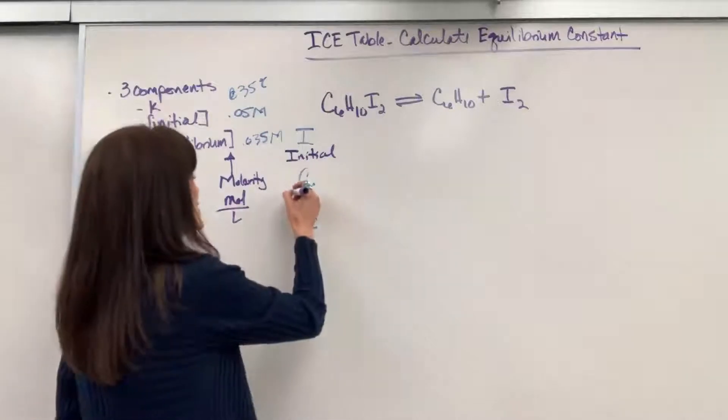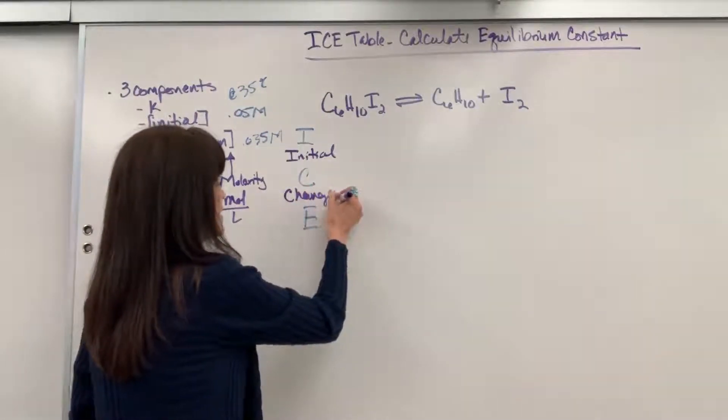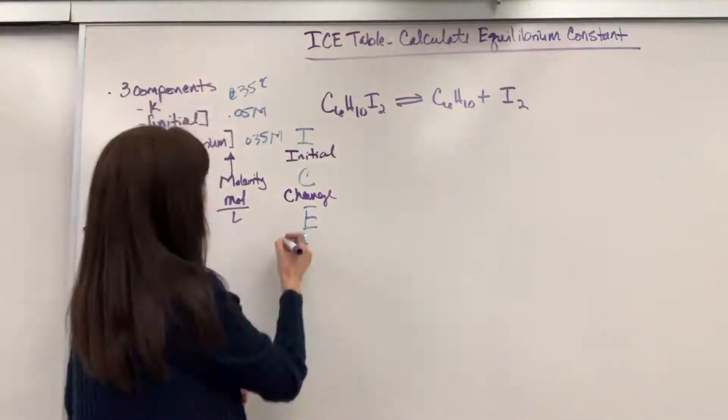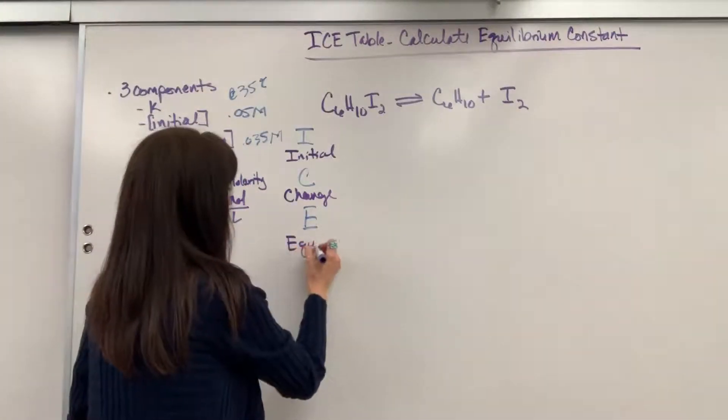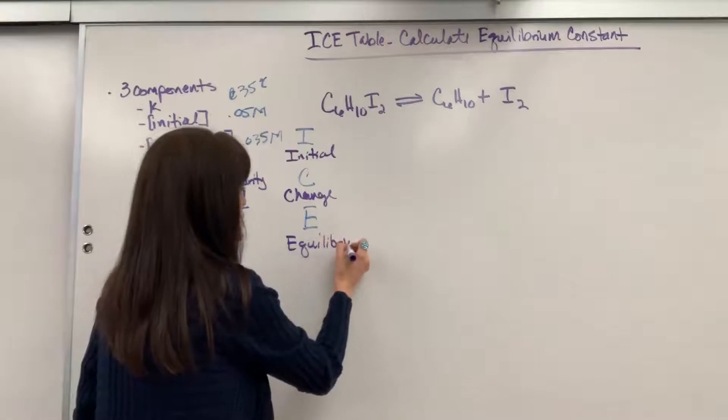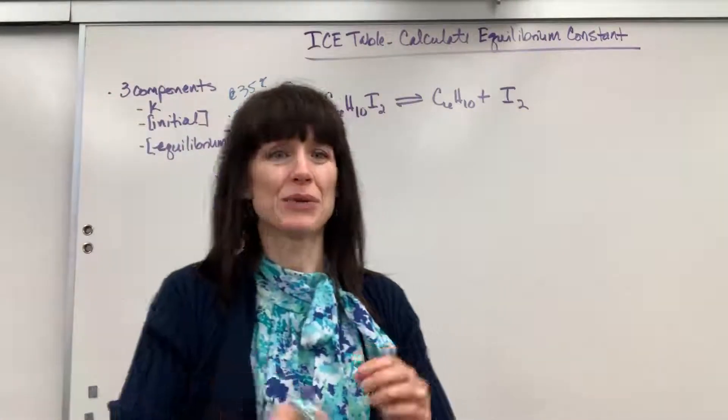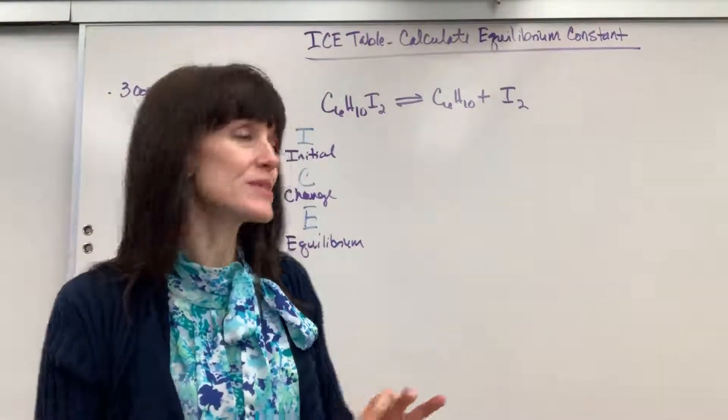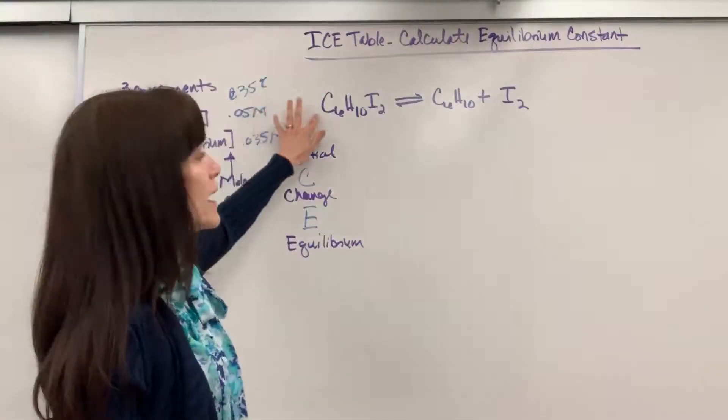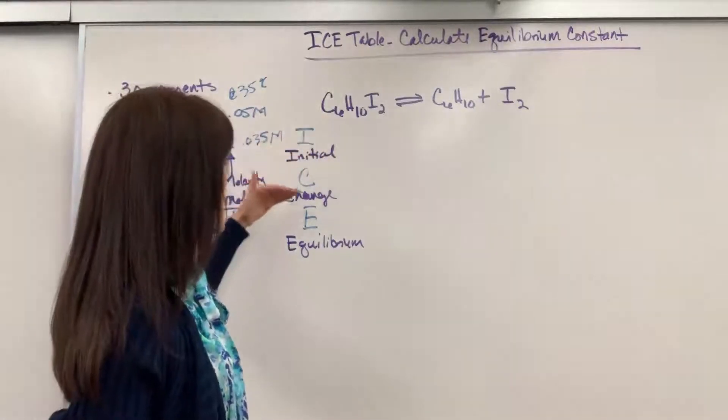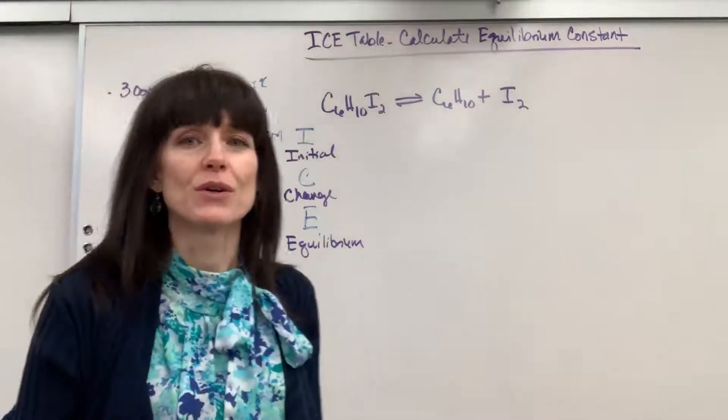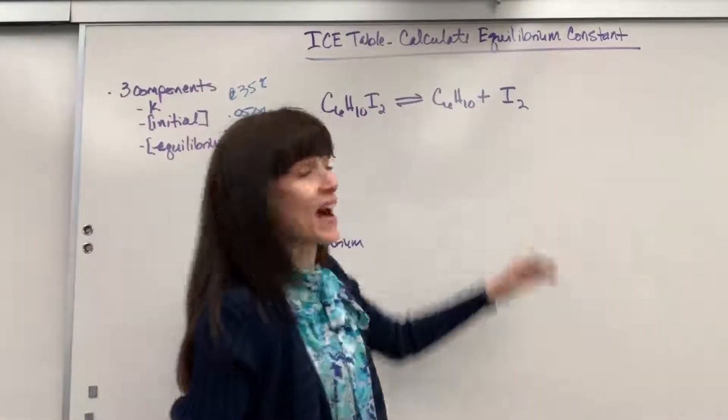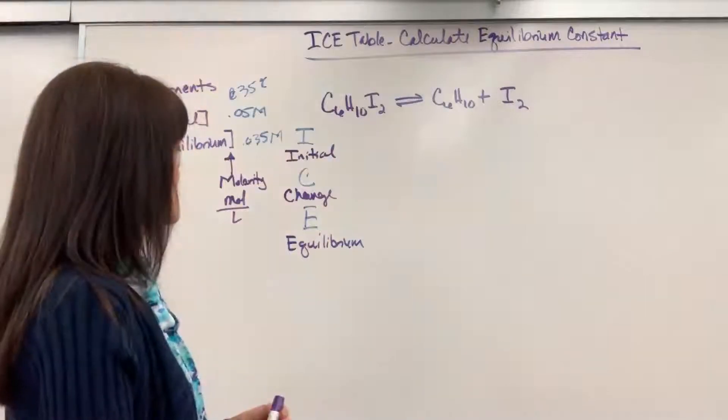C stands for change. So this is as the reaction is going reactants, products, products back to reactants, what's happening. E stands for equilibrium. So there's going to be your concentration when we hit that beautiful equal rate. Just so you know, some people call these RICE tables. They'll put an R right here for reaction, initial change equilibrium. Your teacher might say rice instead of ice. I just say ice and it's understood that you have to write down that chemical reaction.